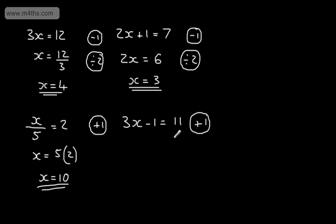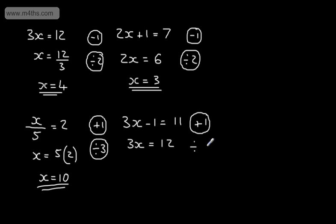So adding 1 to both sides of the equation, we end up with 3x equal to 12. I now need just x by itself, so I'm going to divide both sides by 3. Doing that, we get x equal to 12 over 3, so x equals 4. That makes sense: 3 times 4 minus 1 gives us 11 — 12 minus 1 is 11.